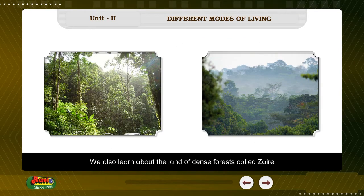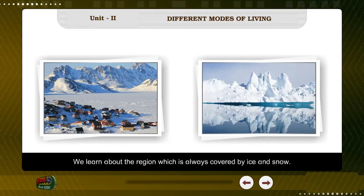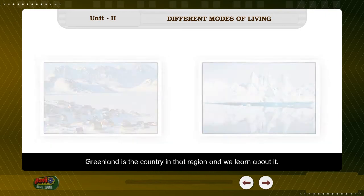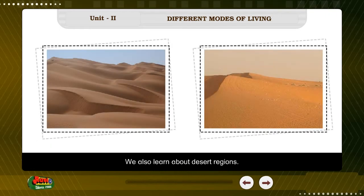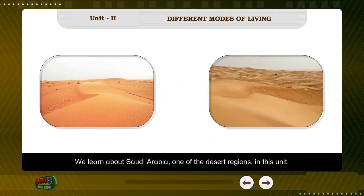We also learn about the land of dense forests called Zaire, which represents the climate of the equatorial region. We learn about the region which is always covered by ice and snow — Greenland is the country in that region and we learn about it. We also learn about desert regions; the land is dry mainly due to climatic conditions. We learn about South Arabia, one of the desert regions in this unit.